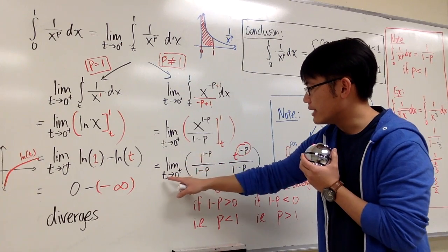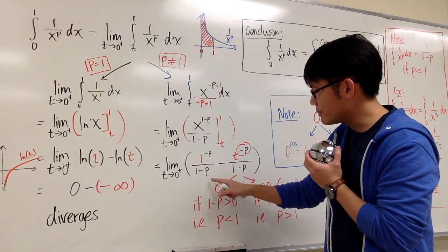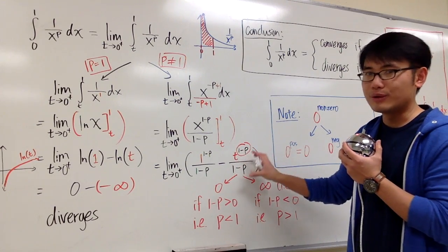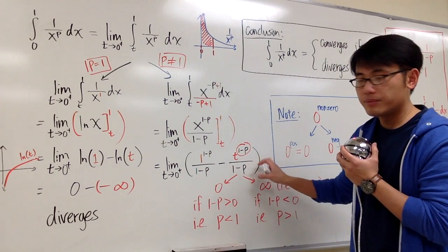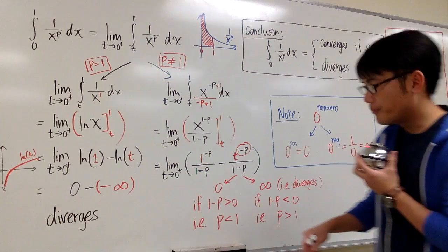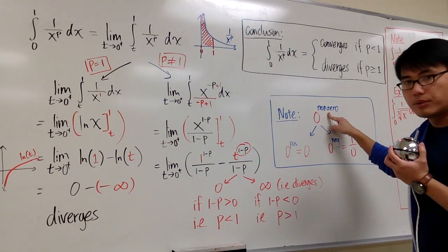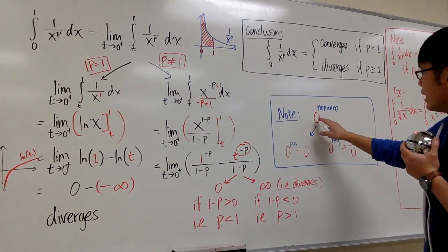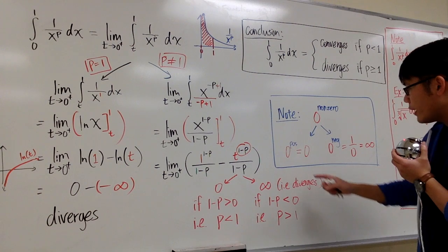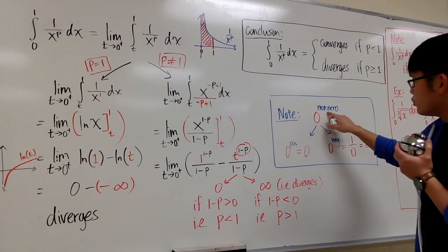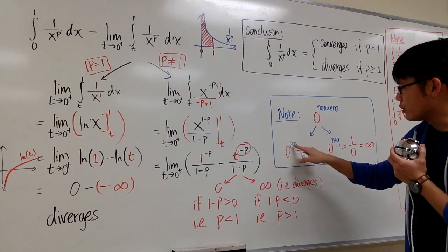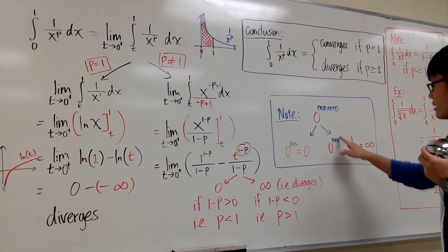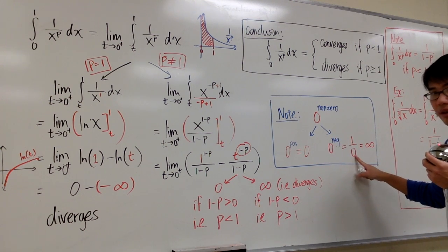I arrive at the stage we have the limit as t goes to 0+, 1 to the 1 minus p over 1 minus p minus t to the 1 minus p power over 1 minus p. This part is a troublesome point because we have to see for what value of p will this converge. We are dealing with t approaching 0+. We are only looking at 0 to a non-zero number. Since p is not equal to 1, there's no way to get 0 here. It's either 0 to a positive value or 0 to a negative value. If you have 0 to a non-zero power, we have only two choices. The outcome will be 0 if we're talking about 0 to a positive number. The outcome will be infinity if we have 0 to a negative value for the power, because the negative power will bring this 0 down to the denominator and it becomes infinity.